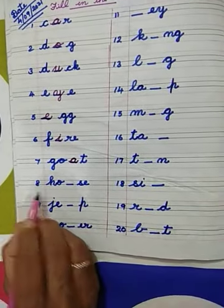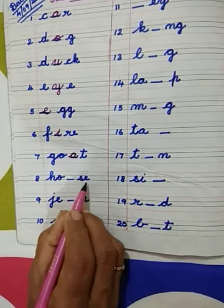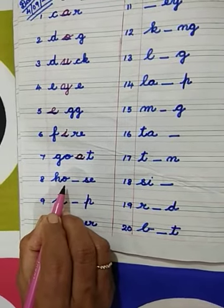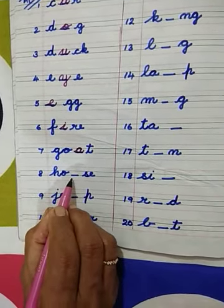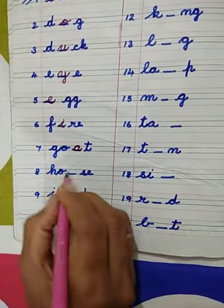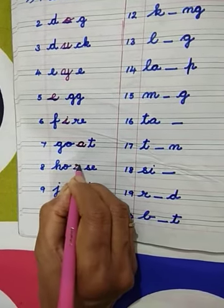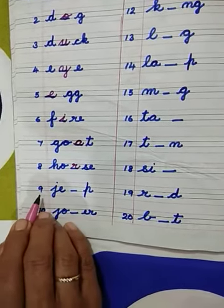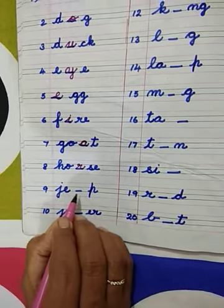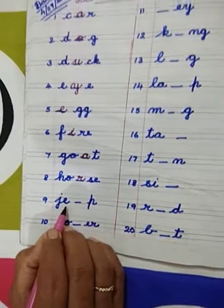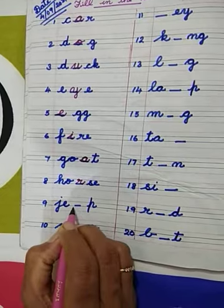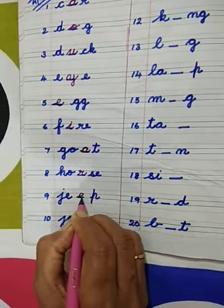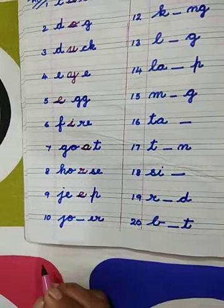Number 8: H-O-S-E. Which weight is this? Very good. Horse. Spelling of horse: H-O-R-S-E. Letter R is missing here. We have to write here letter R and complete the weight horse. Number 9: J-E-P Jeep. Two E's are here, one E is missing. We have to write here letter E and complete the weight Jeep.